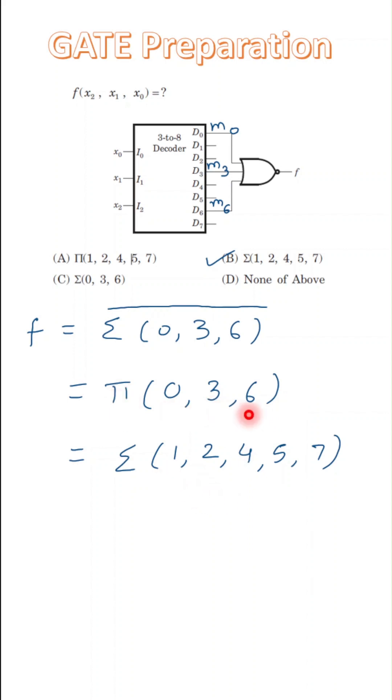So product of maxterm 0, 3, 6 is equal to sum of minterms 1, 2, 4, 5, 7. The correct answer is B, which is sum of minterm 1, 2, 4, 5, 7.